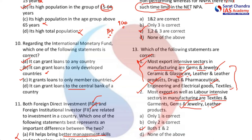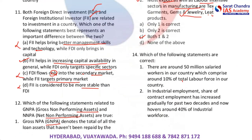Next question: which of the following statements are correct? First: there are around 50 million salaried workers in our country, which comprise around 10 percent of the total labor force. The total working population in India is around 45 to 50 crore, which is 500 million, so this statement is broadly correct. The formal economy is estimated at around 7 to 10 percent.